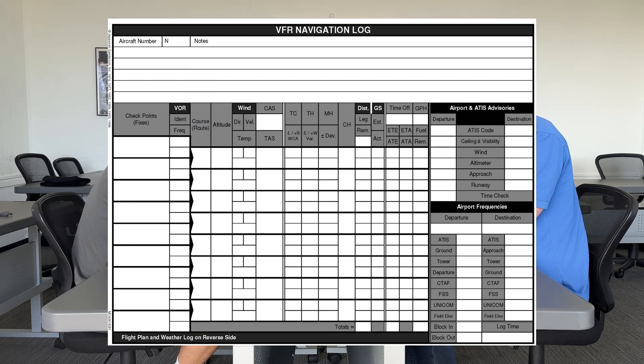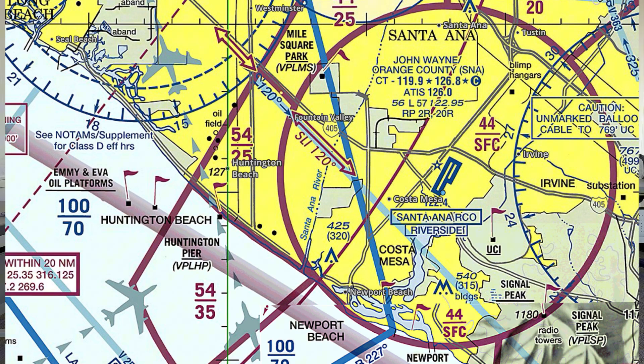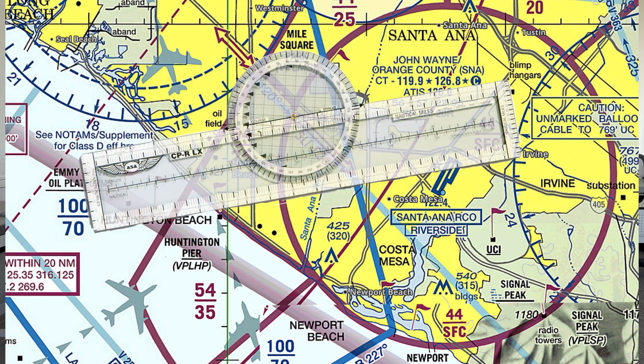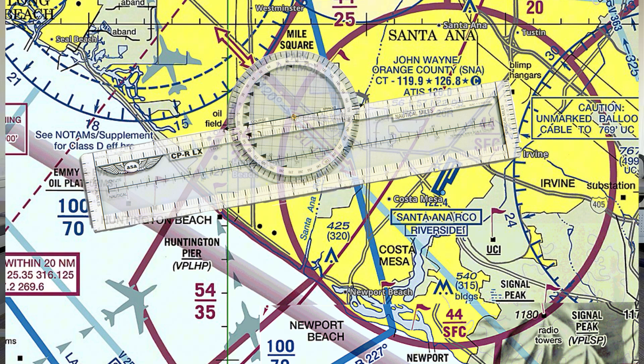I used the course side of the plotter and drew it out to get the approximate heading. I did the same thing for the other legs — from Huntington Beach Pier to the Vincent Thomas Bridge, LAX polar pass, and so on.